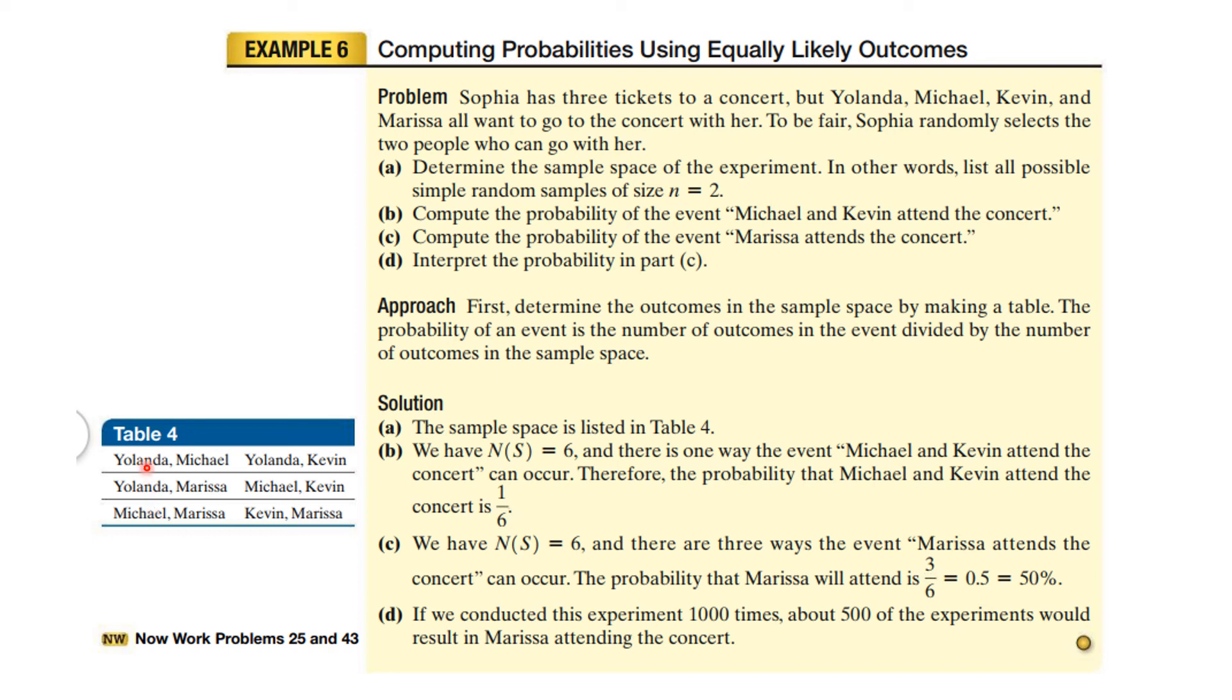Well, here's the sample space. You see, these are the number of different ways she can pick two people to go with her. So that is the sample space. It's listed right there. Now the number in the sample space is six. Therefore, the probability that Michael and Kevin attend, that's only one of these six choices, is one over six. But Marissa appears in three of those. One, two, three. And so the probability that she will attend is 50%. And you would expect, if you did this a thousand times, about half the time, Marissa would be attending the concert.